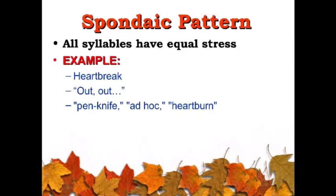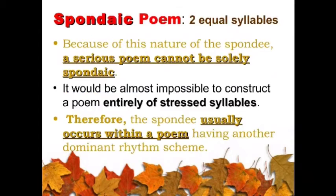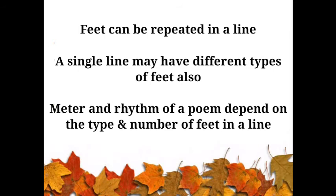Spondee is a combination of two syllables where both syllables are stressed. Two equally stressed syllables are needed for making a spondaic foot. Because of this nature of the spondee, a serious poem cannot be solely spondaic — it would be almost impossible to construct a poem entirely of stressed syllables. Therefore, the spondee usually occurs within a poem that has another dominant rhythm scheme.